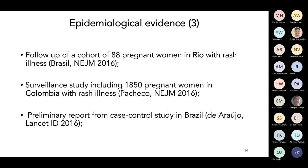You have this cohort with preliminary reports from studies being conducted — a follow-up of 88 pregnant women in Rio with rash illness. More data was emerging from other countries. Colombia also had an important outbreak, with large groups of pregnant women being followed up. There was also the preliminary report from a case-control study in Brazil needing more numbers, but already indicating that the association was very plausible.